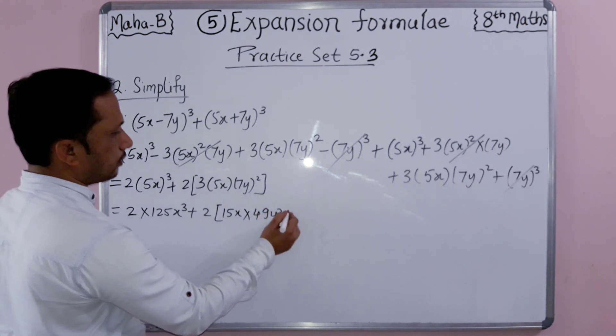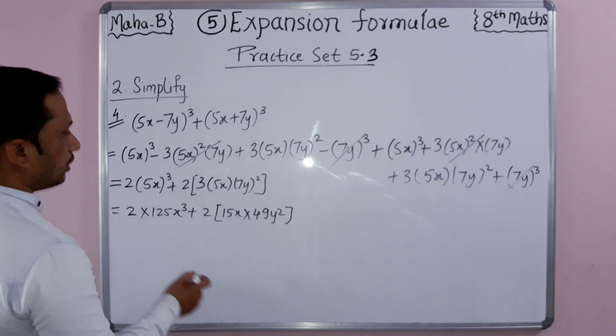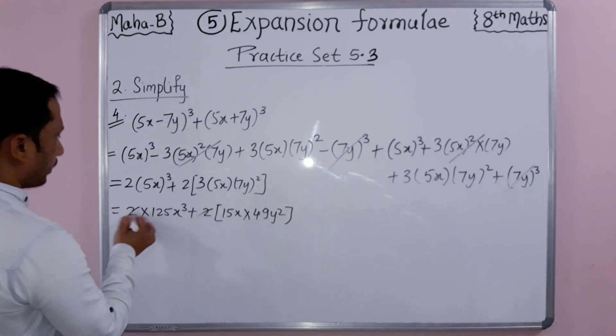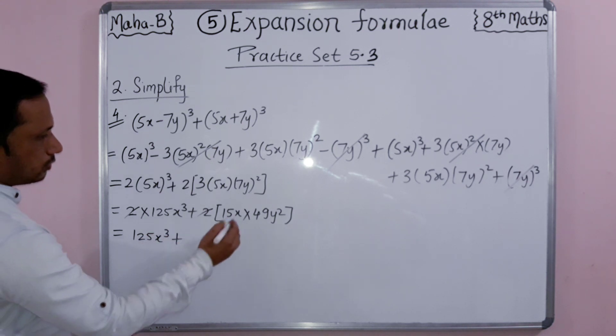Students, so now see, this equation we can divide by 2 and this 2 and 2 will get cancelled. So what is remaining? 125x³ plus we have to multiply 15 into 49.